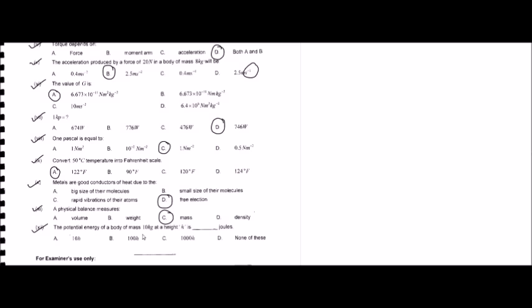Question number twelve: the potential energy of a body of mass 10 kilograms at a height h is how many joules? The mass is given and the height is given, and you need to calculate potential energy. The formula is: potential energy equals mass times g times height.